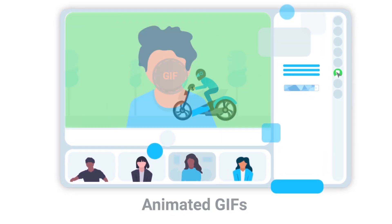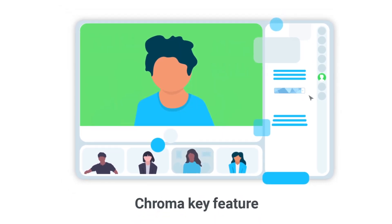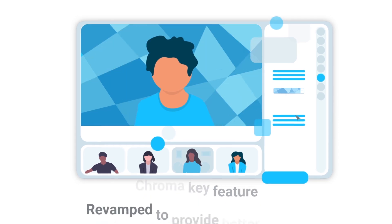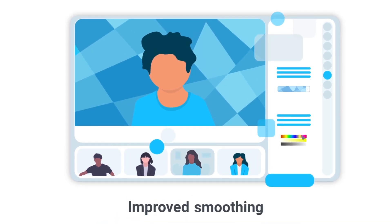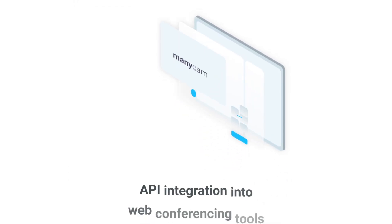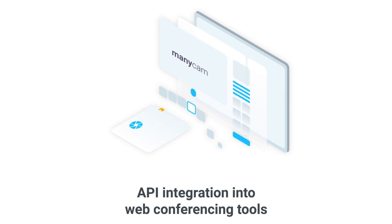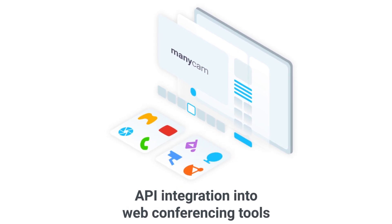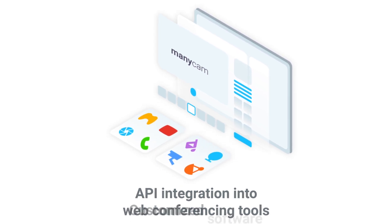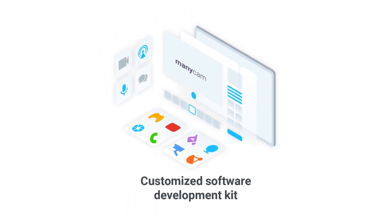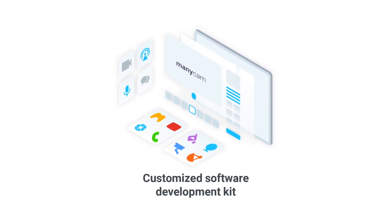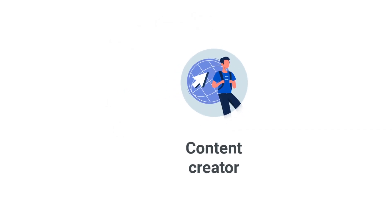The chroma key feature is completely revamped to provide better results with improved smoothing. Our API can be integrated into your web conferencing tools or customized to your needs with our software development kit.